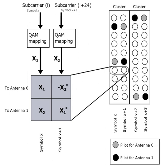STC may be further subdivided according to whether the receiver knows the channel impairments. In coherent STC, the receiver knows the channel impairments through training or some other form of estimation. These codes have been studied more widely, and division algebras over number fields have now become the standard tool for constructing such codes. In non-coherent STC the receiver does not know the channel impairments but knows the statistics of the channel. In differential space-time codes neither the channel nor the statistics of the channel are available.